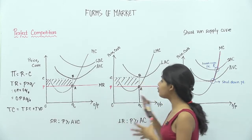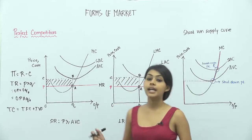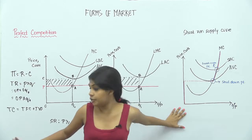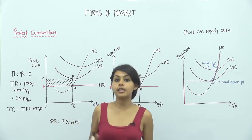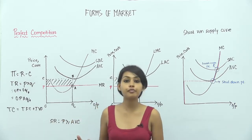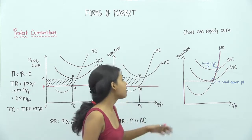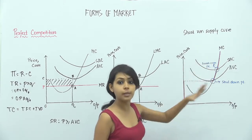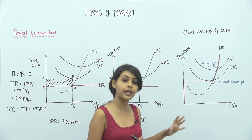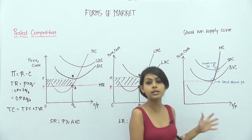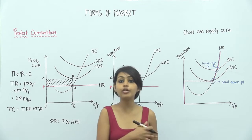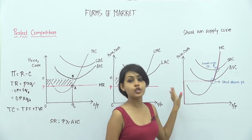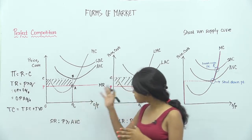Having studied these two diagrams, it helps us reach a very important conclusion. Whatever we have studied about the conditions of profit maximization, especially in the short run, helps us reach what we have called the short-run supply curve. We will learn the short-run supply curve because our syllabus covers the long-run supply curve, so we are completely going to exclude the long-run supply.